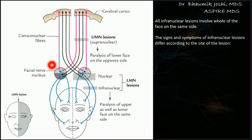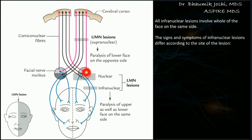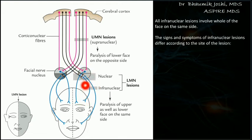In a lower motor neuron lesion, whatever cross-linking at the nucleus was going to take place has already taken place. From the nucleus onward, whether fibers came from the contralateral or ipsilateral side, they supply the entire same side of the face — both the upper and lower halves. So if the lesion occurs at the nuclear level or infranuclear level, the whole ipsilateral half of the face will become paralyzed.